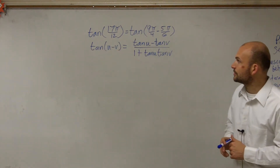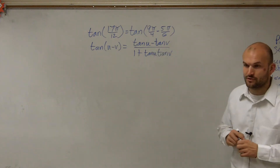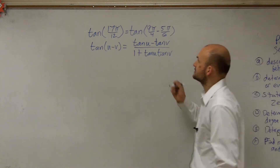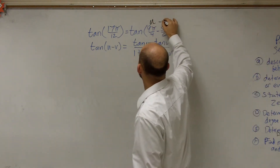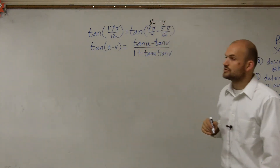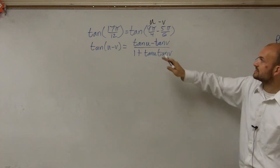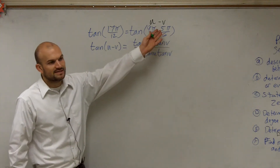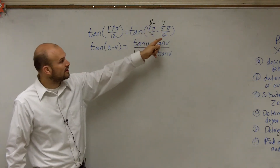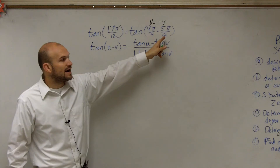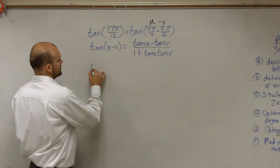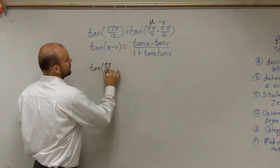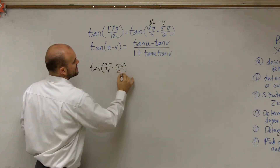What we're going to do is make sure we have the correct formula written down. We have our angle broken up as u minus v, so this is the same as the tangent of u minus v. Here's our u — which is 9π/4 — and here's our v — which is 5π/6. So we simply replace our u's and v's with those values.